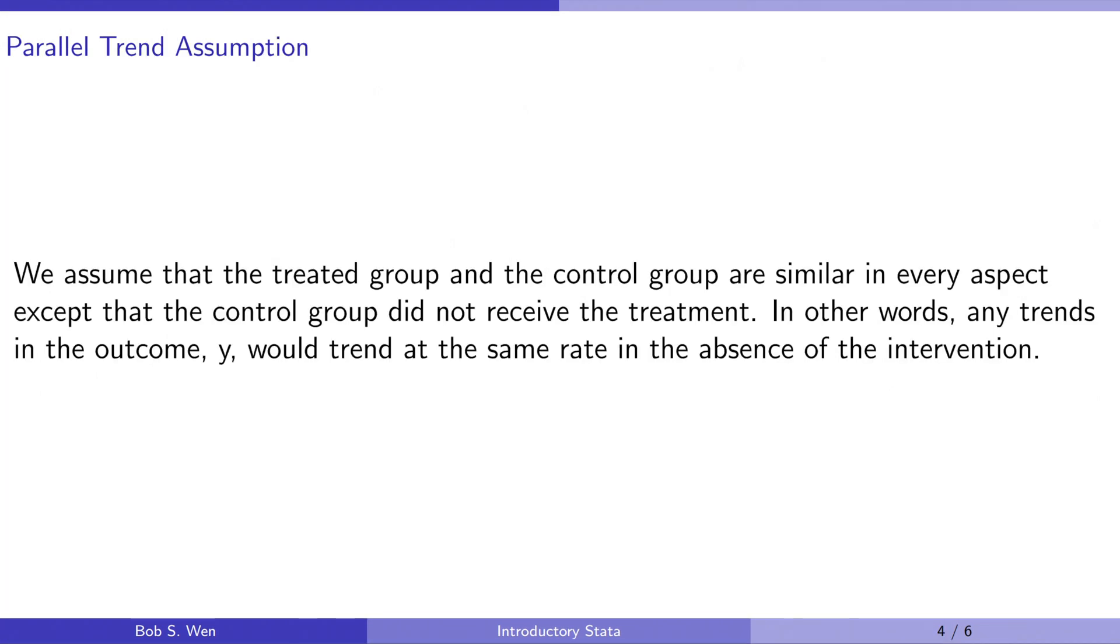A crucial assumption for the basic difference in differences model is the parallel trend assumption. We assume that the treated group and the control group are similar in every aspect except that the control group did not receive the treatment. In other words, any trend in the outcome would trend at the same rate in the absence of the treatment.